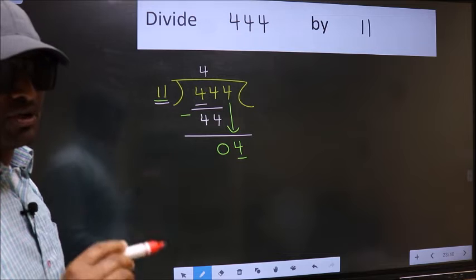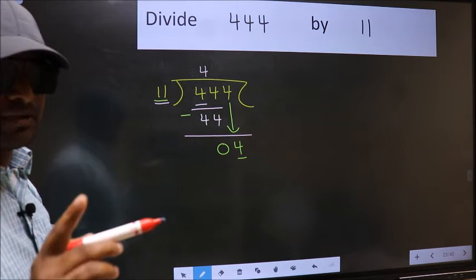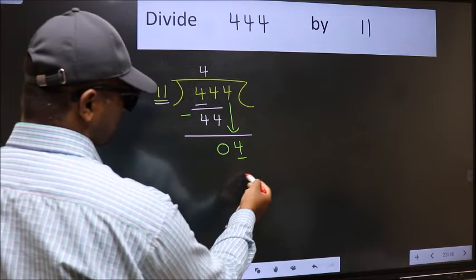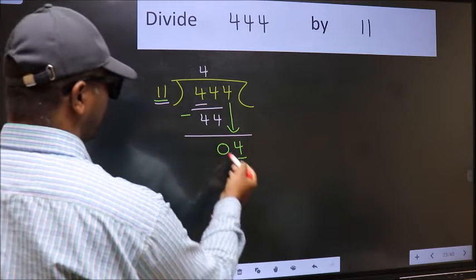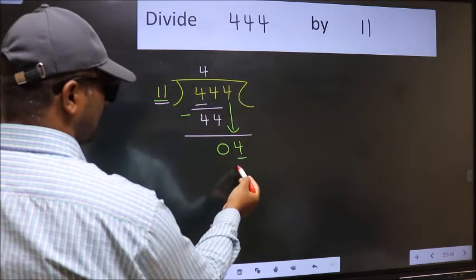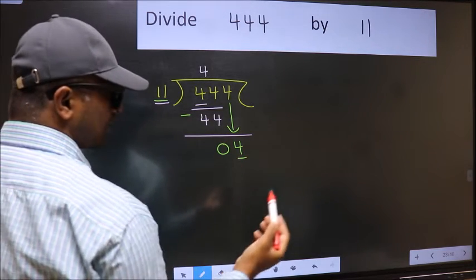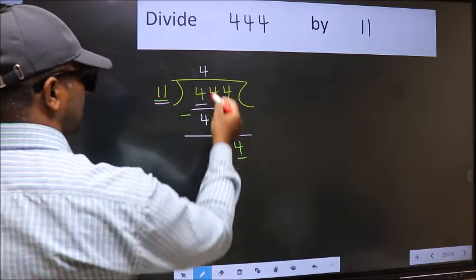Instead, what you should think of doing is which number should we take here? If I take 1 we will get 11, but 11 is larger than 4, so what we should do is we should take 0.